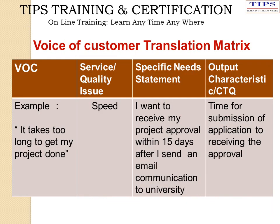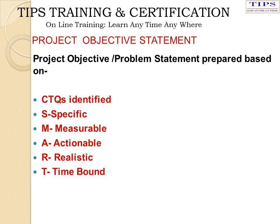This is an example of conversion of voice of customer to the CTQ. For example, the voice of customer is 'it takes too long to get my project done,' while the CTQ for the same is 'time for submission of application to receiving the approval for the project.' CTQs need to be SMART — that is, specific, measurable, actionable, realistic, and time bound.